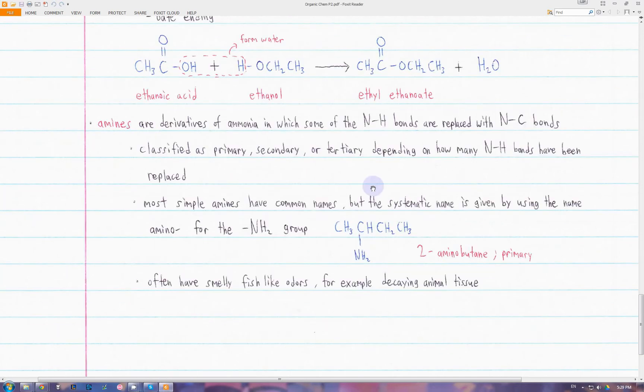The last class of molecules are amines. Amines are derivatives of ammonia, NH3, in which some or all of the nitrogen and hydrogen bonds are replaced with nitrogen to carbon bonds. We can classify amines as primary, secondary, or tertiary, depending on how many of these NH bonds are replaced with NC bonds.